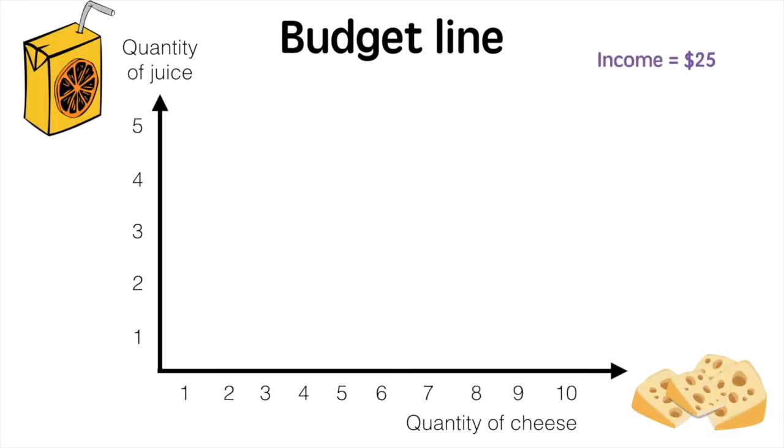Suppose the individual's income is $25. The price of juice is $5 a box and cheese is $2.50 a piece.